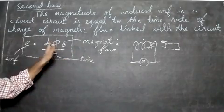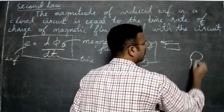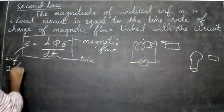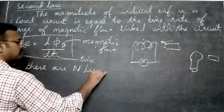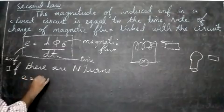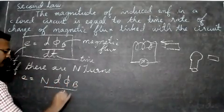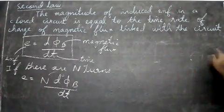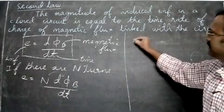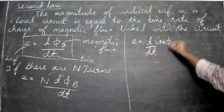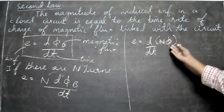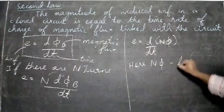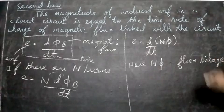In this equation, we considered just one turn of the coil. But in real life, we have N turns. So if there are N turns, the equation becomes: E is equal to N into dΦB by dT. We can bring N inside the derivative, giving E is equal to d by dT of NΦ. Here, NΦ stands for the flux linkage.